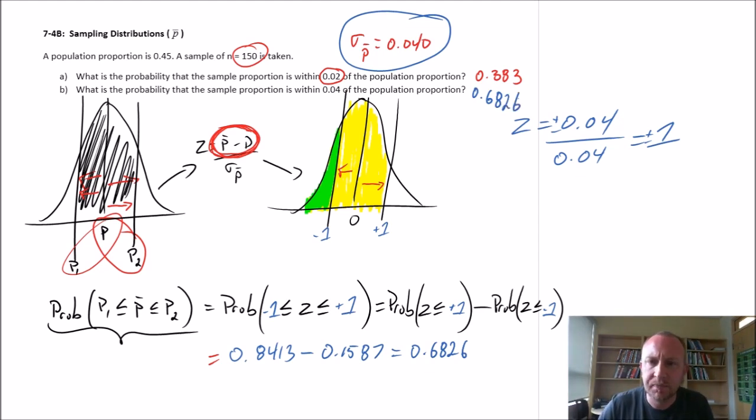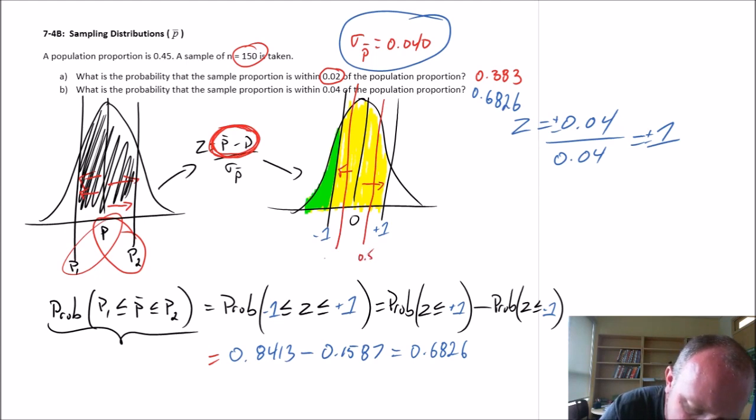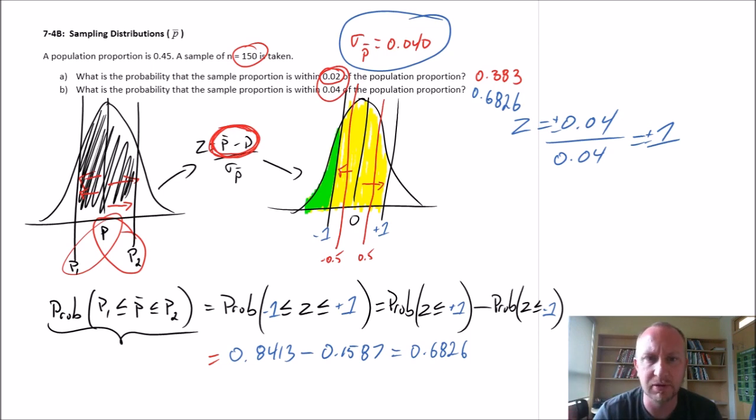So as my interval gets wider, the probability that my sample proportion falls within that interval increases, because my interval of interest has increased. So there's a larger interval, there's a higher probability that my sample proportion will fall within a growing or a larger interval. If we increase our tolerance from 0.02 to 0.04, the probability, the likelihood that my sample falls within that interval is going to be higher.